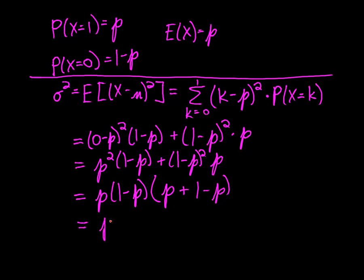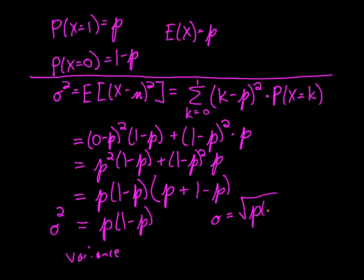So we find that the variance of a Bernoulli random variable is p times 1 minus p. For the standard deviation, we just take the square root of that. That gives the variance and standard deviation for a Bernoulli random variable.